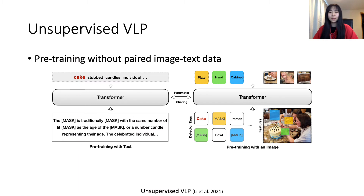Pre-training with unpaired data is explored in unsupervised VLP. In this work, the model only takes inputs from one modality at a time during pre-training. For example, given text, the model is trained to predict masked words. Given image, the model is trained to predict masked regions and detected tags. As the image-text data is not paired, we do not have supervision for image-text matching at pre-training stage. During fine-tuning, the model will be fully supervised.